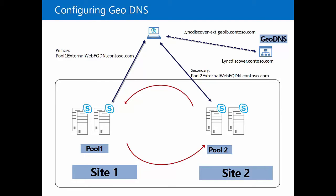As you can see in this diagram, we have two pools — Pool 1 and Pool 2 — in two distinct sites which are paired to each other. Each of the pools have their own respective external web services FQDNs. We also have central items such as Link Discover, our Meet URLs, our Dial-in URLs, and so forth that are common across all of our pools.